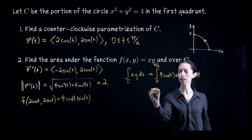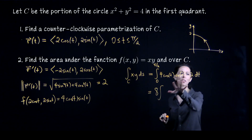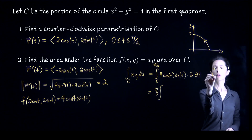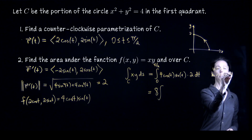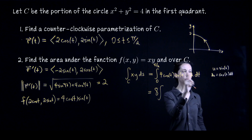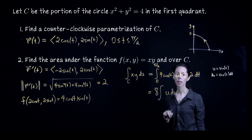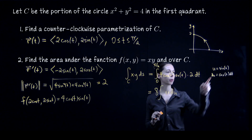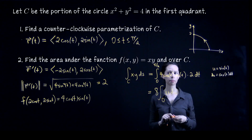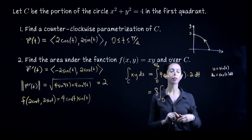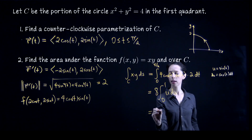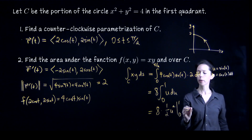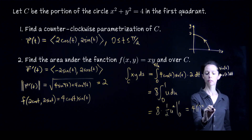Pulling out the constant gives 8 times the integral. Let u = sin t, so du = cos t dt — that takes care of the rest of the integrand: cos t · sin t dt = u du. Changing bounds: when t = 0, u = sin 0 = 0; when t = π/2, u = sin(π/2) = 1. Anti-differentiating gives 8 · (1/2)u² evaluated from 0 to 1, which is 4 · 1² − 4 · 0² = 4.